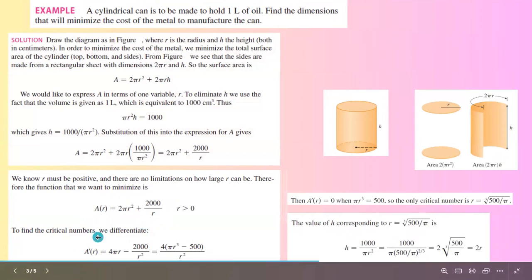The derivative of 2πr² with respect to r is 4πr. And here you have 2000/r. The derivative becomes -2000/r². We can simplify this by taking the common denominator and setting this equal to zero.